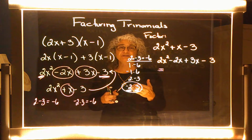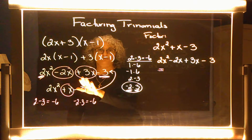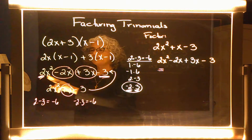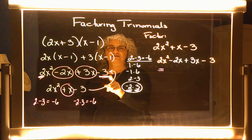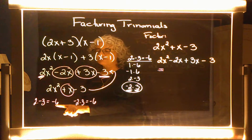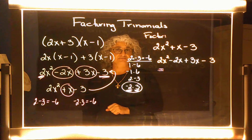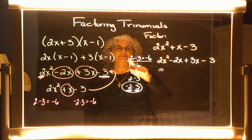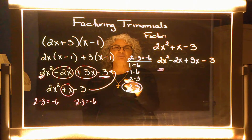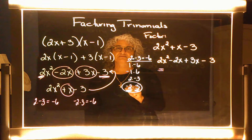How did we do it? We noticed that in the distribution process, the first and last terms when multiplied together give the exact same answer as taking the middle two numbers and multiplying them together. So we took the first and last number, multiplied them together, and found the combination that multiplied to negative six and at the same time added to positive one.